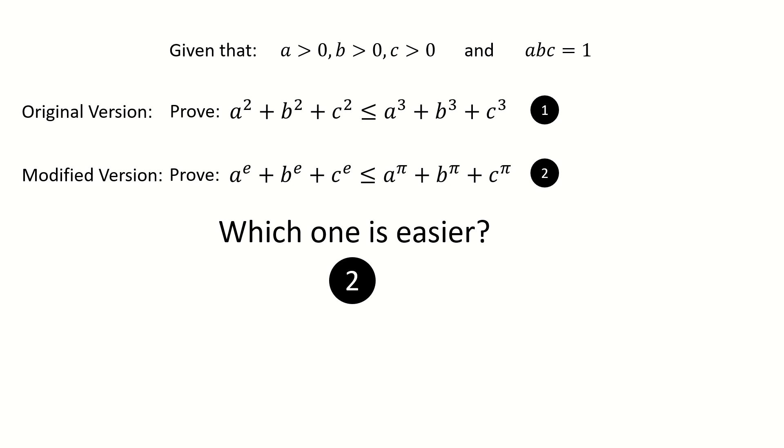Here is the reason. For the original version, since all indices are integers, it's very likely to distract you to the wrong directions. For example, you might try to use some tricks such as complete square, complete cube, or introduce and subtract some additional terms, or to make a factorization, etc. But all these attempts are on the wrong directions.